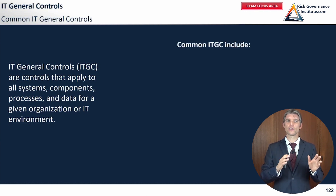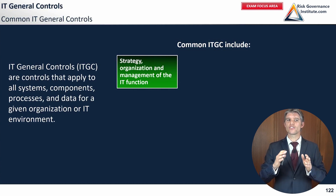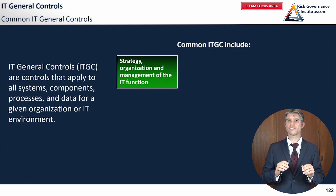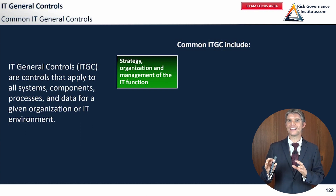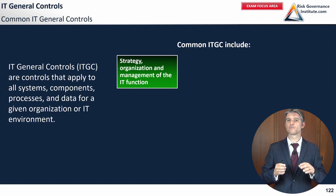Common ITGCs include strategy, organization, and management of the IT function. External auditors — and internal auditors as well — might request a certain formality of IT procedures. This allows consistency and gives a baseline for what IT controls an organization should have, allowing testing against these. It also allows operational teams to work towards meeting the goals of the strategy, organization, and management policies and procedures within an IT function.